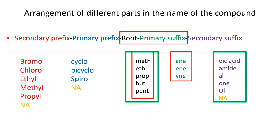From the secondary suffix section, the compound can contain only a single functional group suffix — it could either be oic acid, amide, al, one, or ol. It cannot contain two main functional groups; all other functional groups will be considered as secondary prefixes. As far as the secondary prefix is concerned, the compound can contain many of them, and they will be arranged in alphabetical order.